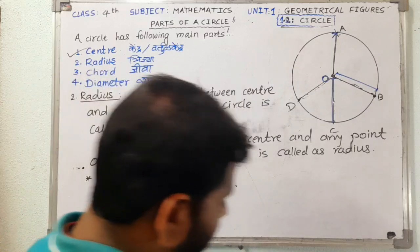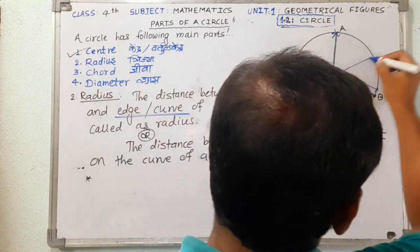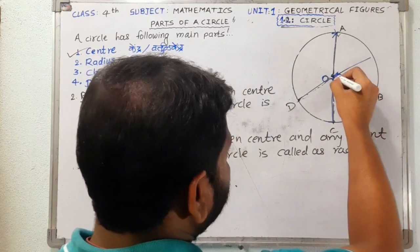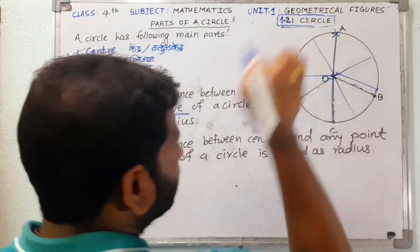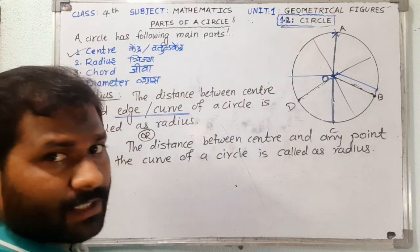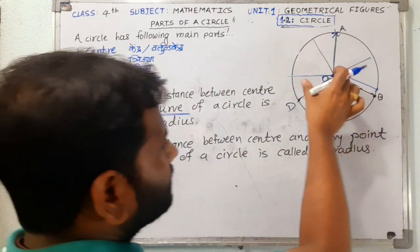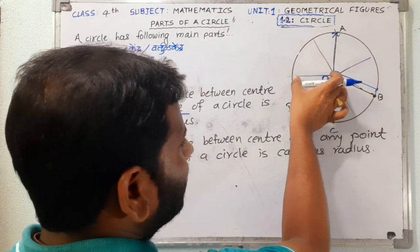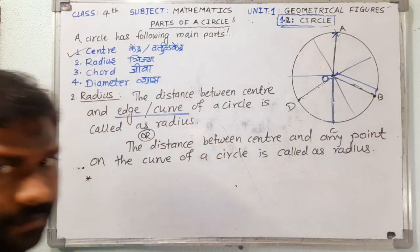We can draw the radius like this — this is a radius, this is also a radius, this one is a radius, and this one is also a radius. So radius is the distance between the center and any point on the curve.